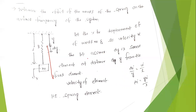The velocity is Ẋ. Let Dy be a small element at a distance y from the fixed end. We consider this small element Dy. The distance from the fixed end is y, and the total length of the spring is L. The small velocity of the element: Dẋ divided by y equals ẋ divided by L. So Dẋ = y·ẋ/L — that is the velocity of the small element.